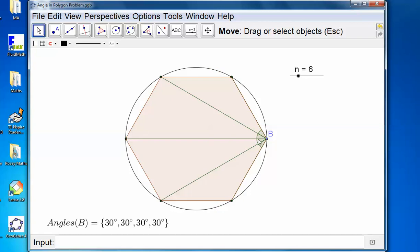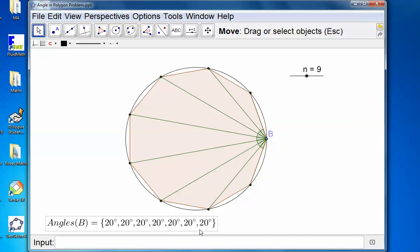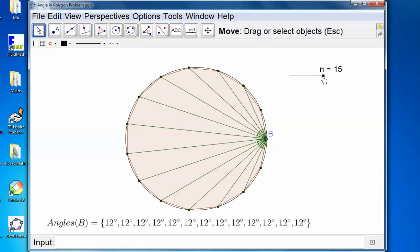For a six-sided regular polygon, they're all 30. So it seems to be the case. And for a nine-sided polygon there, they're all 20. And I can keep on increasing this. And you see that they are always the same.